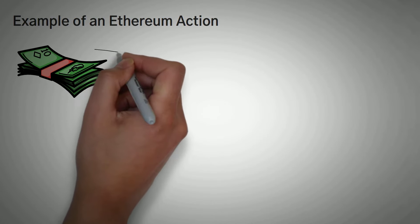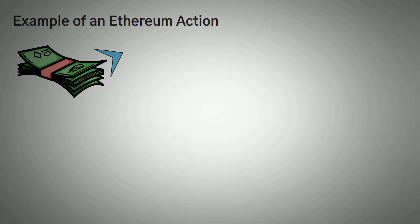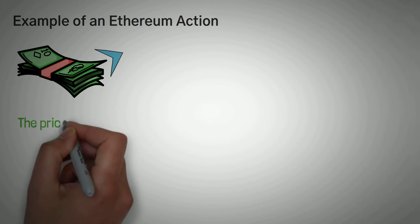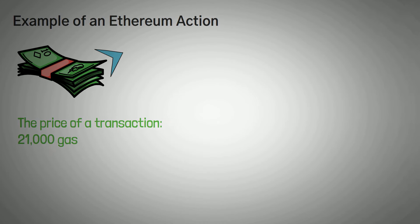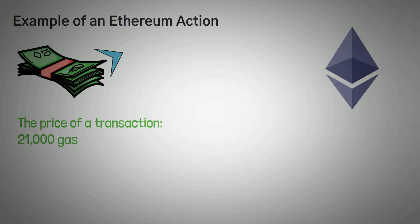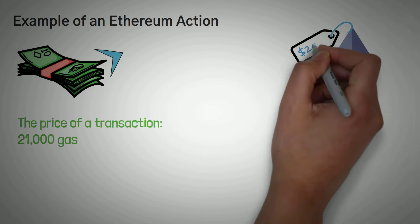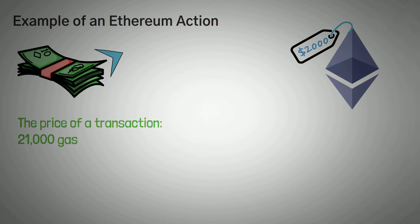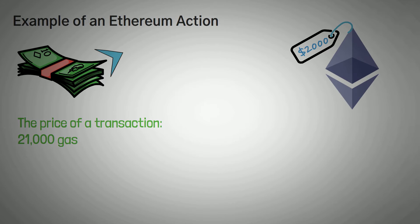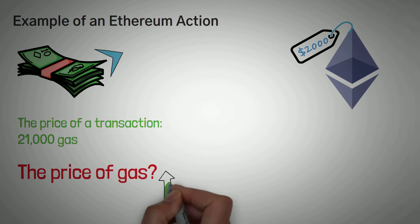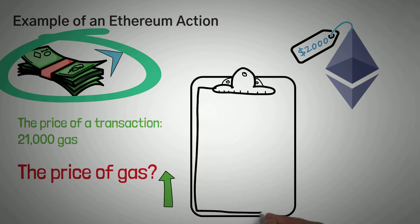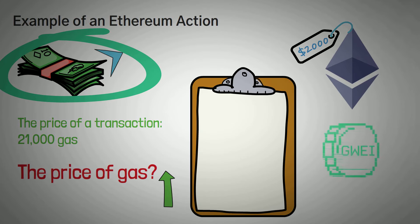Let's say you want to send some money to your friend. The first thing we need to know is the price of what a transaction costs — that is 21,000 gas, and this number never changes. The next thing is the price of Ethereum, which right now is $2,000 USD, and this changes all the time. The third thing is the price of gas, which can be whatever you want it to be, but the higher it is, the faster that calculation will be performed. Let's assume the average price of gas is 100 GWEI.